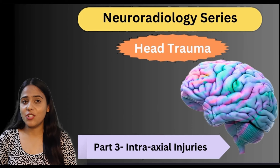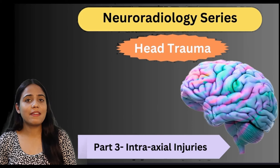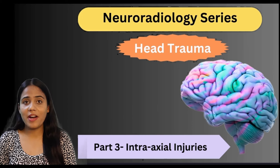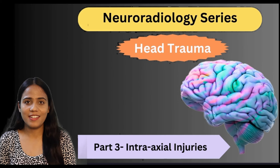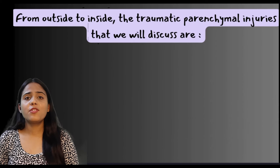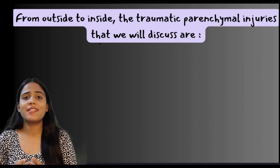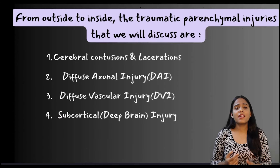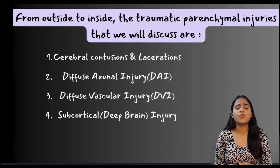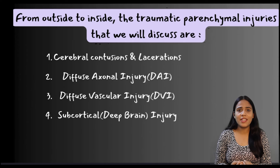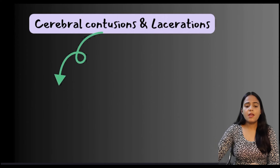Let's talk about intra-axial injuries. This is part 3 of a series called head trauma where we will discuss things pertaining to neuroradiology. From outside to inside, the traumatic intra-axial brain injuries are cerebral contusions and lacerations, diffuse axonal injury, diffuse vascular injury, and subcortical deep brain injury.